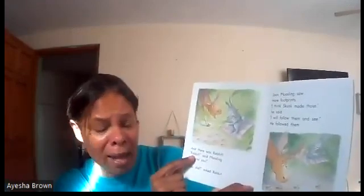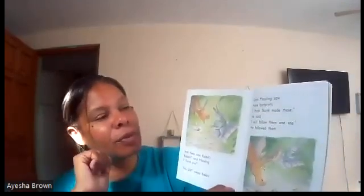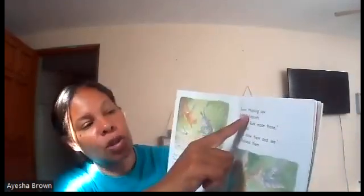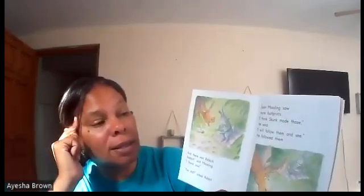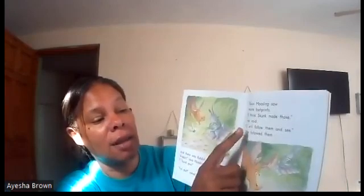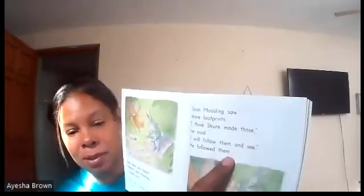On page six — and there was Rabbit. 'Rabbit!' said Moosling. 'I found you!' 'You did,' asked Rabbit. Page seven: Soon Moosling saw more footprints. 'I think Skunk made those,' he said. 'I will follow them and see.' He followed them... there's another ellipsis.